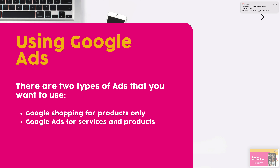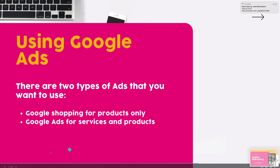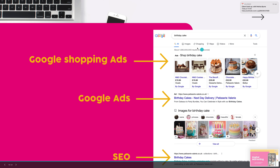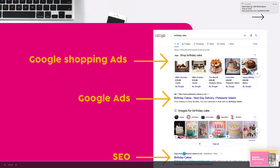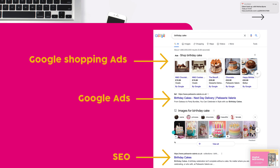Now let's go through Google Ads. There are two types: Google Shopping, for products only, and Google Ads, for services and products. If you type in 'birthday cake,' the Google Shopping ads appear at the very top with product images. Google Ads appear below and are more useful for services — but it's worth doing both for extra reach. Below those you'll see organic SEO results; for example, Patisserie Valerie has invested in both SEO and ads. Use the right keywords — do a Google search on similar businesses to get keyword inspiration.